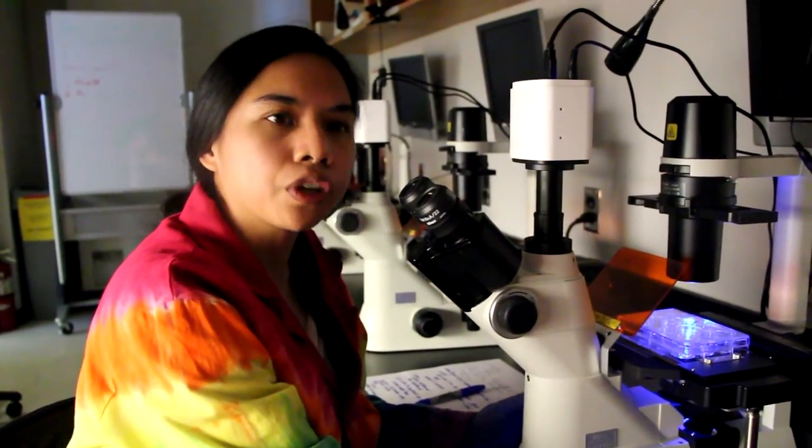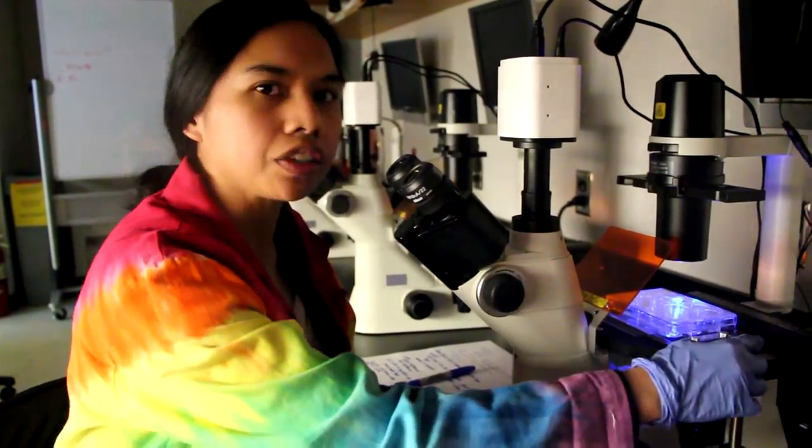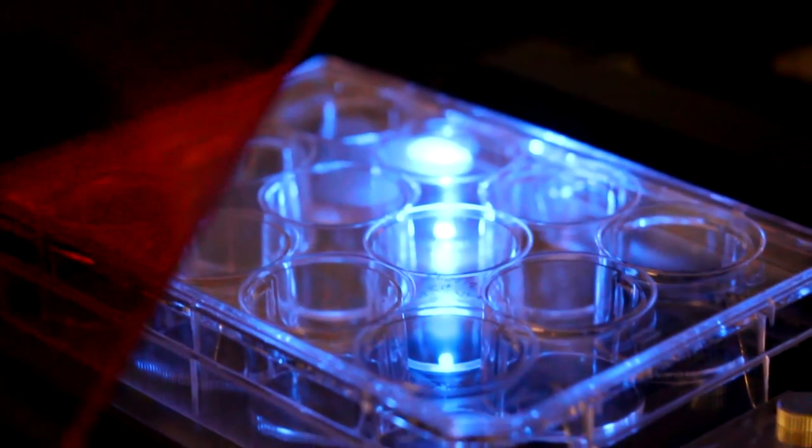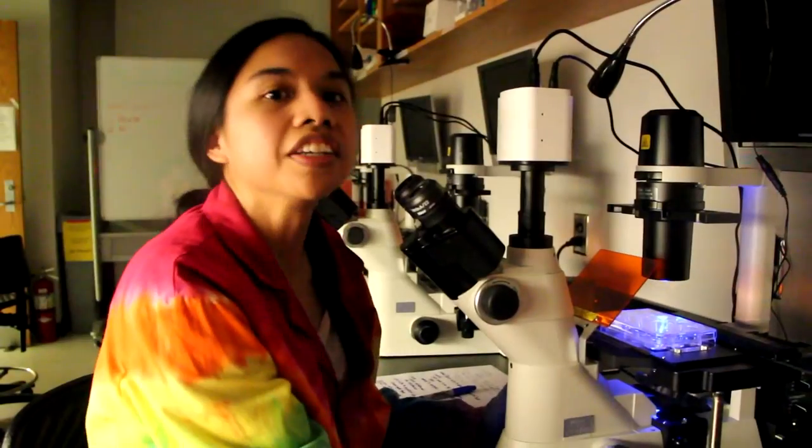In order to visualize green fluorescent proteins, we're going to need to use the cyan LED, or the C, on the light source. You can focus on your cells using the fine adjustment knob.